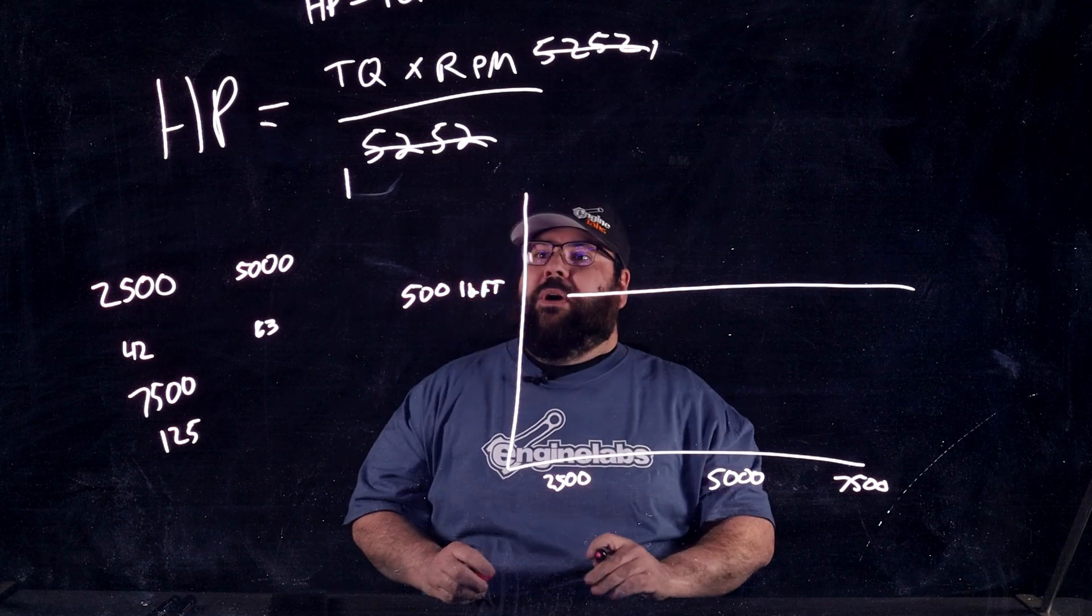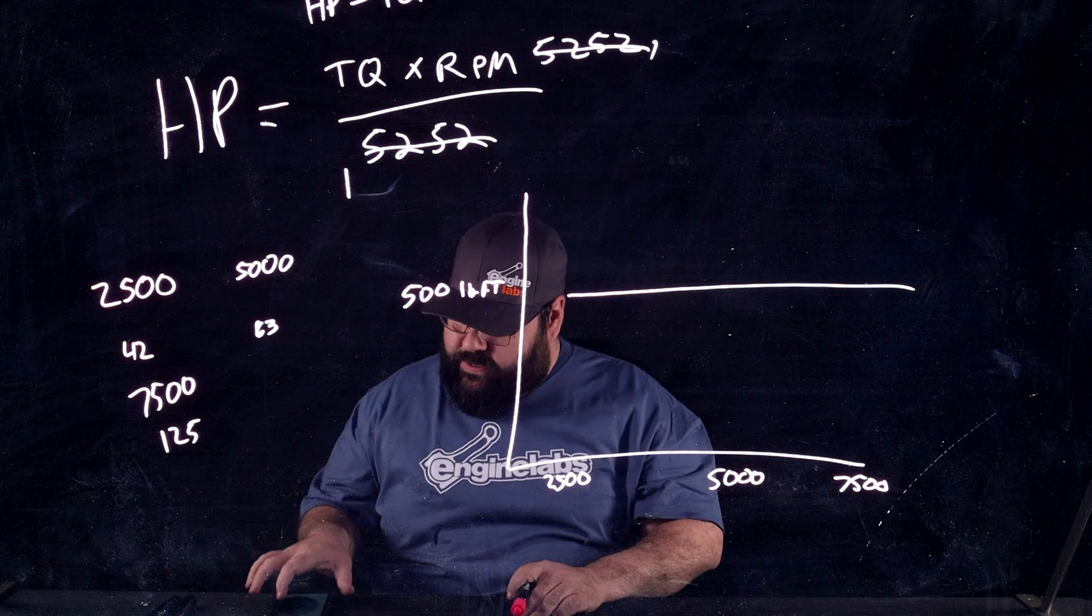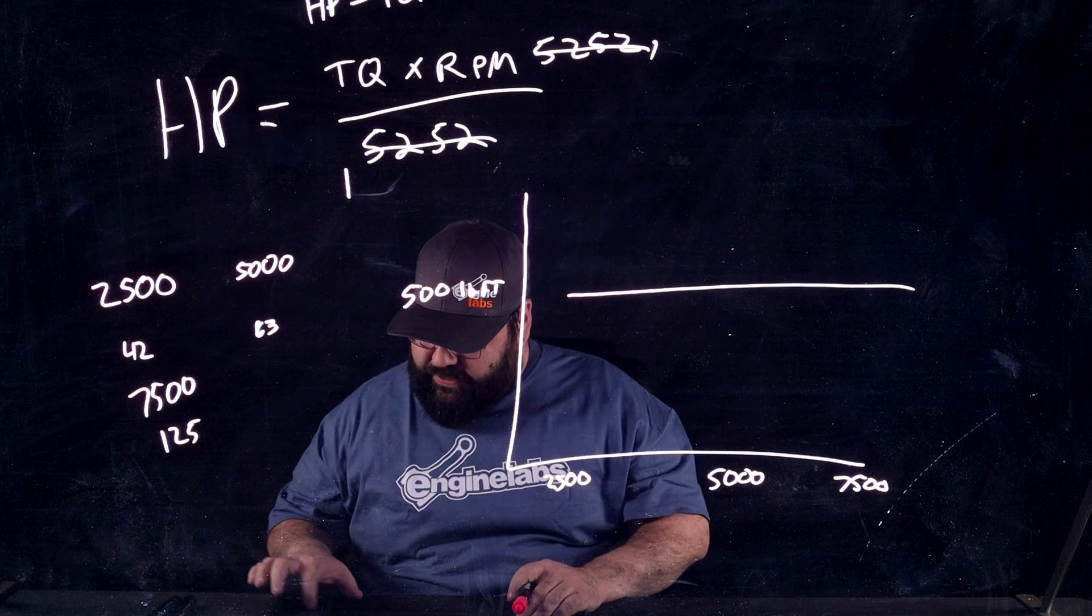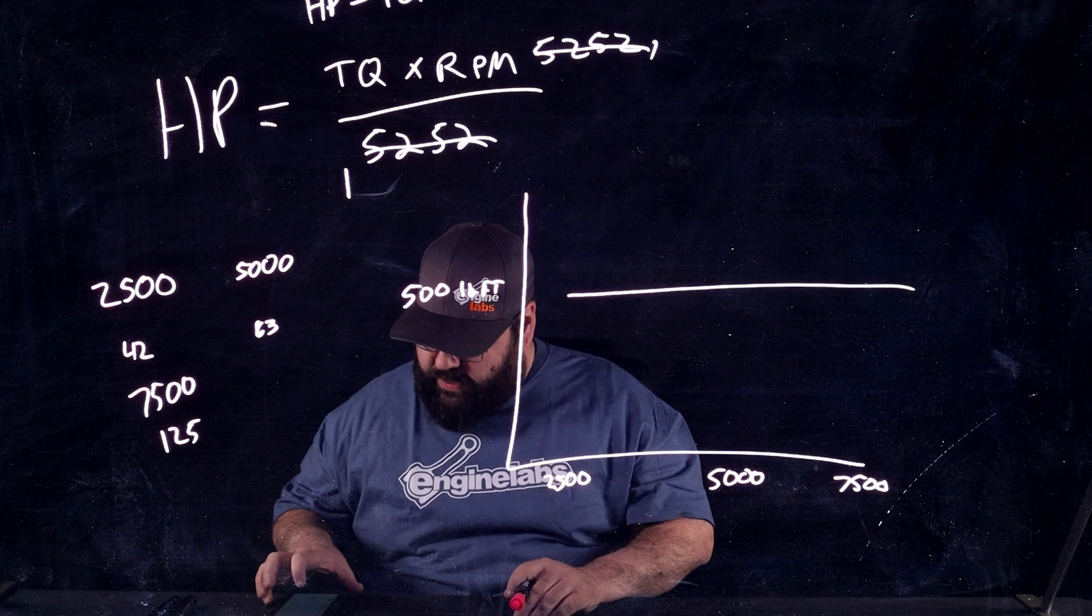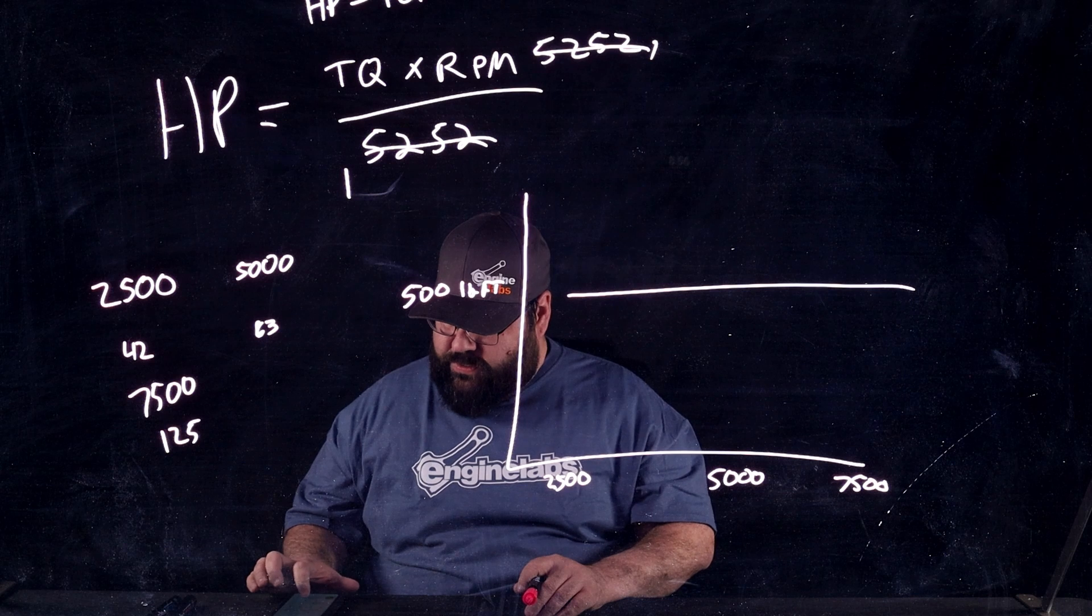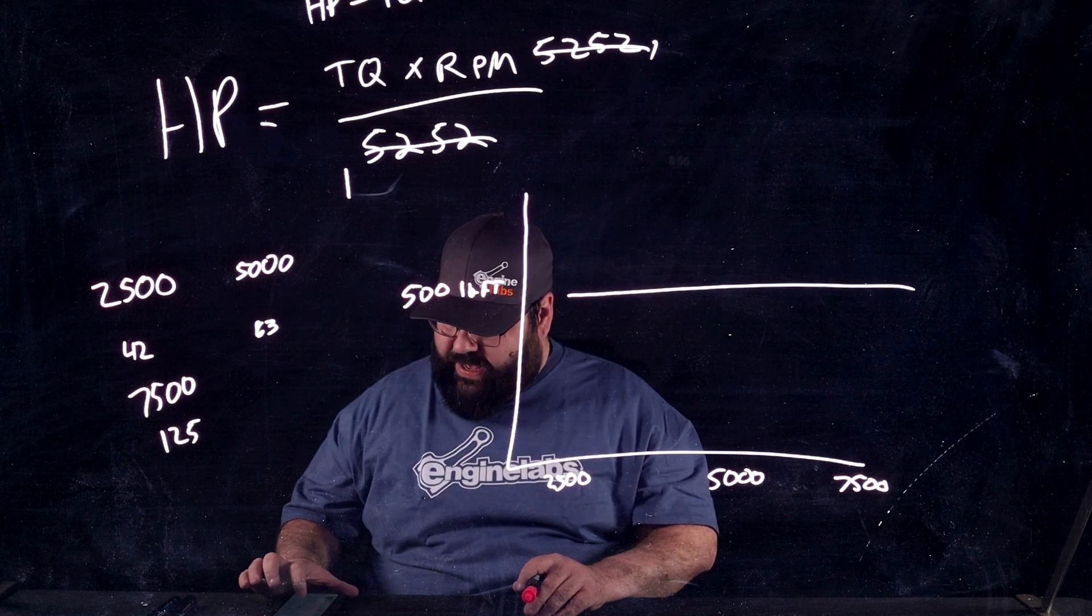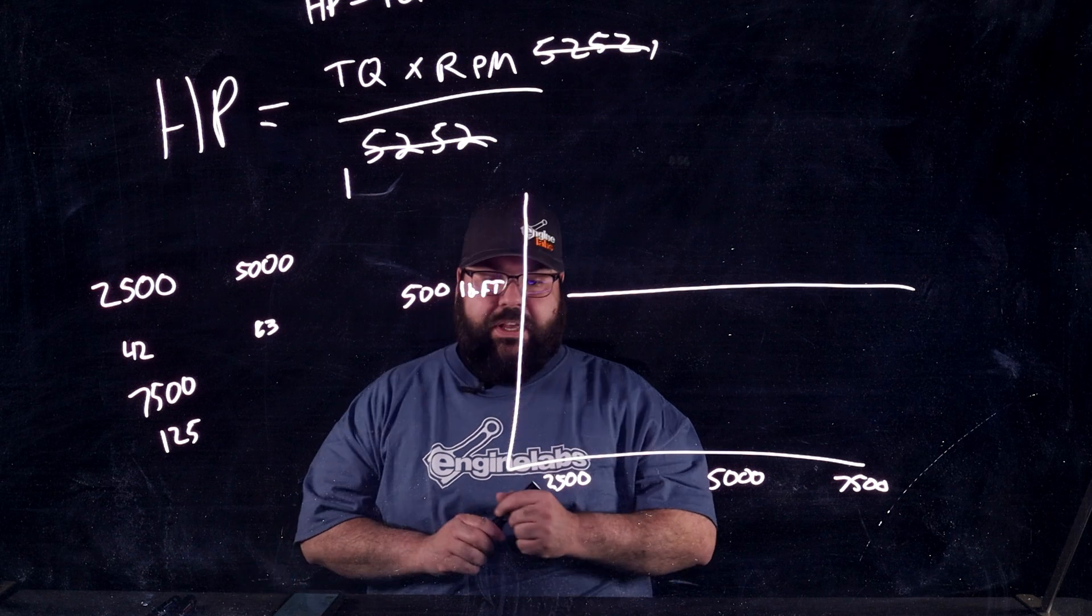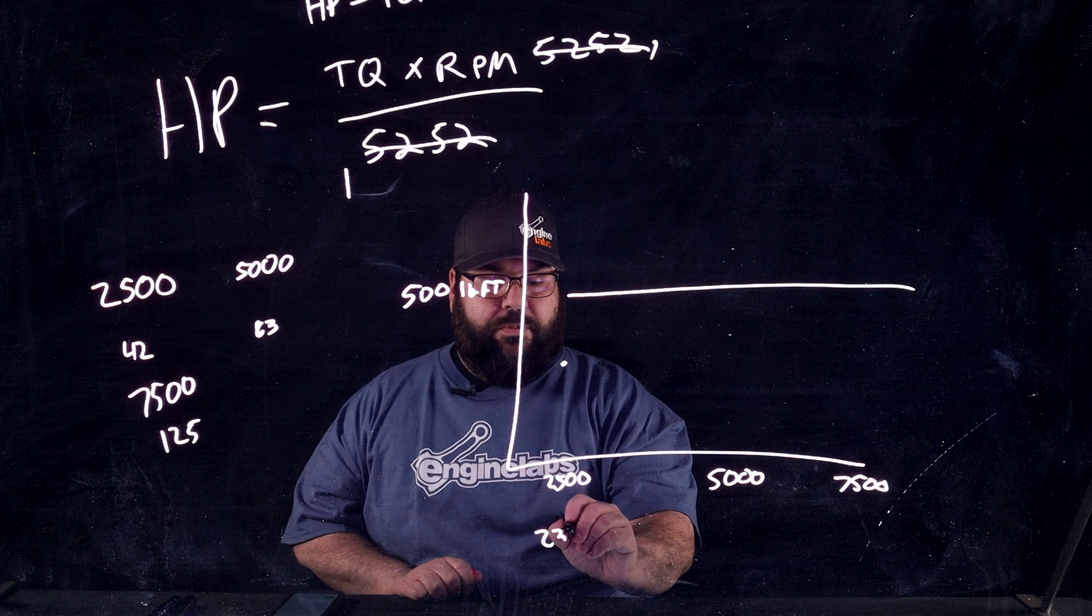All right, cool. So, let's do the first equation. We're going to go horsepower equals torque. Let me pull up my calculator here. All right. So, we're going to go 500 pound-feet of torque times 2,500 RPM. Then we're going to divide that by 5,252. And we get 238 horsepower.